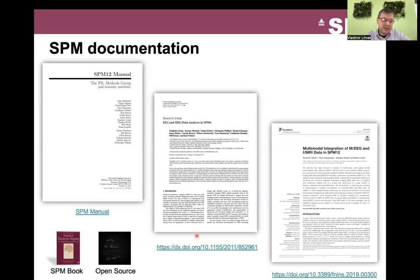The SPM book, which came out in 2007, contains all the basics of classical inference that haven't really changed since then, and also covers source reconstruction, Bayesian inference, and the basics of DCM. If you want to take a deep dive into theory, this book is useful. You can also use the code itself — it is open source and mostly well documented, so if you want to get into the details of how SPM works, you can look at the code.